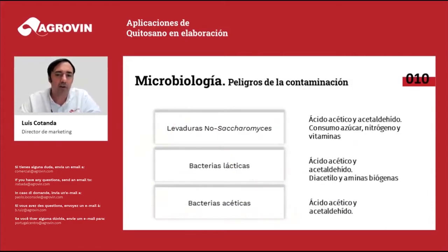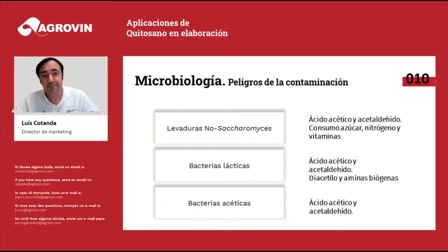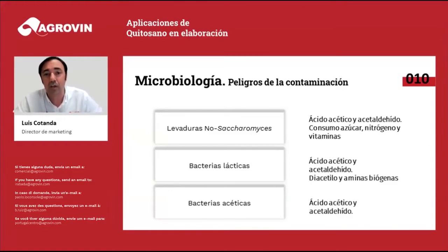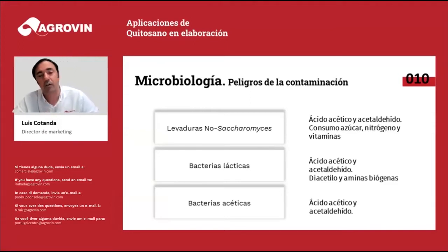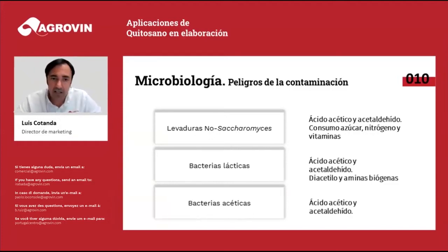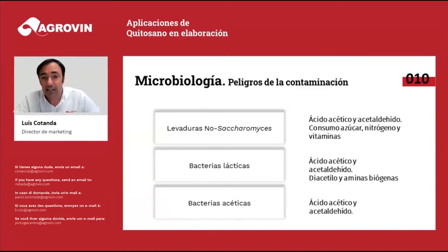What are the problems of these types of microorganisms? The non-saccharomyces yeasts that are highly concentrated in the grapes — both healthy and attacked grapes — apart from producing acetic acid in their sugar consumption, it is also important to bear in mind their consumption of certain nutrients: not only sugar, which is not greatly consumed at the beginning, but they can also consume nitrogen, other easily assimilable compounds, and thiamine as well.